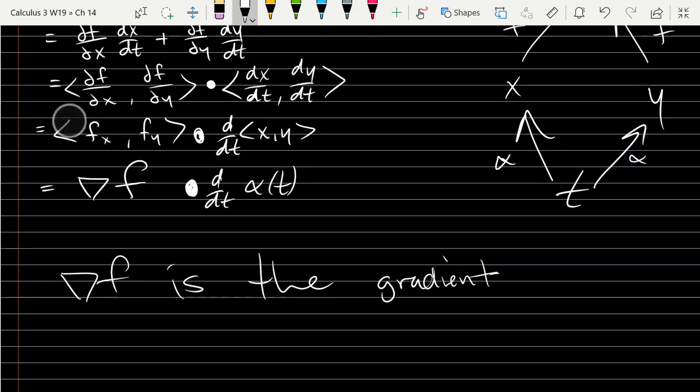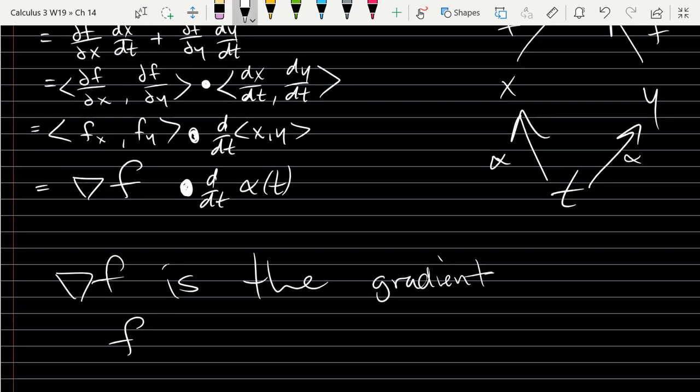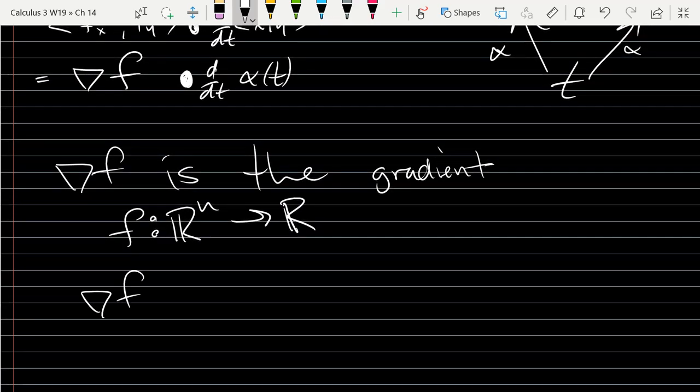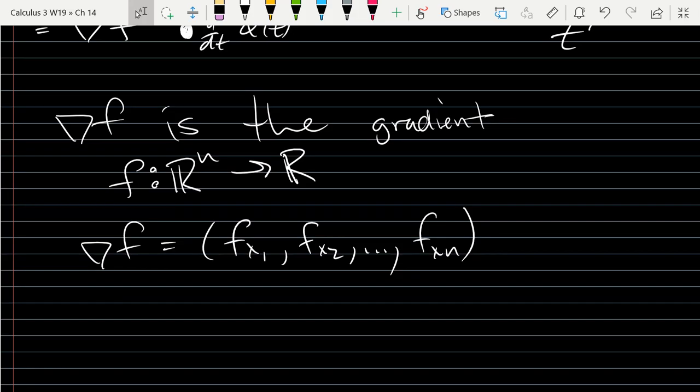So ∇f is the gradient. If f goes from Rⁿ into R, then gradient f will be fx₁, fx₂, ..., fxₙ. So the gradient is going to have n dimensions to it, just like the input to the function f.